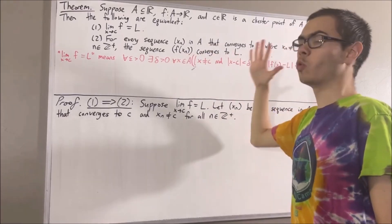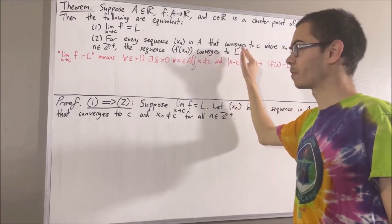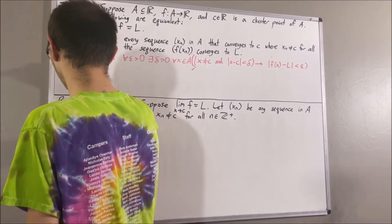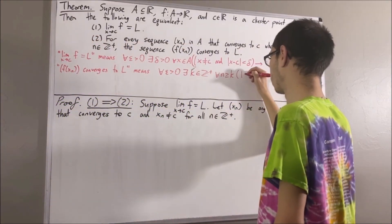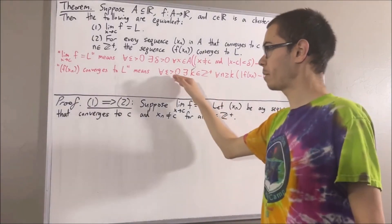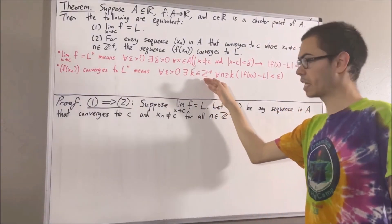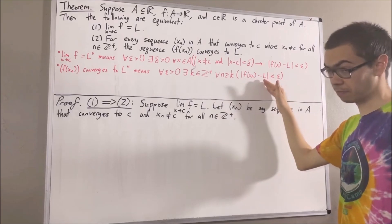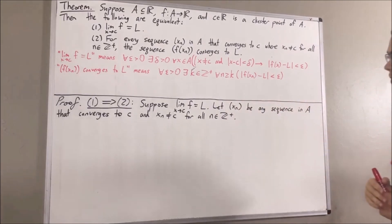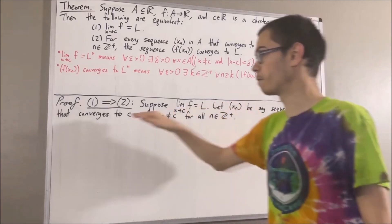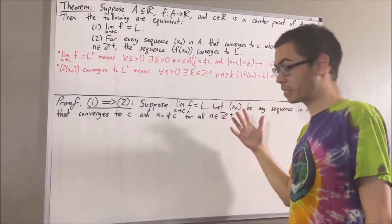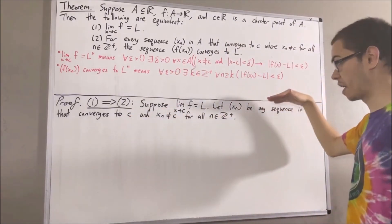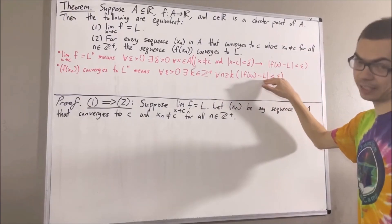What does it mean for F of Xn to converge to L? By definition of limit of a sequence, it means: for every epsilon greater than zero, there exists a positive integer K, such that for all positive integers N greater than or equal to K, the absolute value of F of Xn minus L is less than epsilon. We're given that our sequence Xn converges to C, and by definition of the limit of a sequence, to say that Xn converges to C means the same thing — just with Xn and C instead.